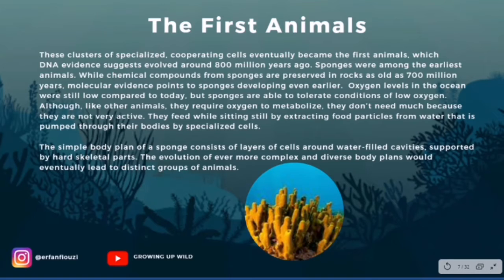Oxygen levels in the oceans were still low compared to today, but sponges are able to tolerate conditions of low oxygen. Although like other animals they require oxygen to metabolize, they don't need much because they don't move or are not very active. They feed while sitting still by extracting food particles from the water pumped through their bodies by specialized cells. The simple body plan of a sponge consists of layers of cells around water-filled cavities supported by hard skeletal parts. The evolution of ever more complex and diverse body plans would eventually lead to distinct groups of animals. The assembly instructions for an animal's body plan are in its genes, and there is evidence that parts of the inner structures for complex bodies were present even in the earliest animals.